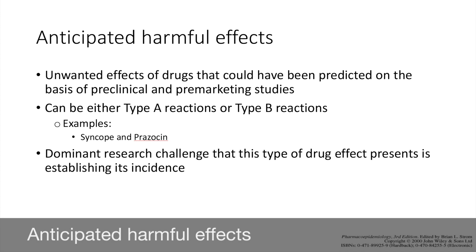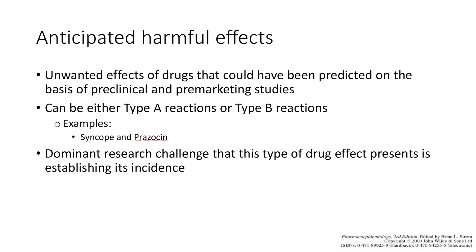Next, anticipated harmful effects are unwanted effects of drugs that could have been predicted on the basis of preclinical and pre-marketing studies. They could be either type A reactions — predictable and dose-dependent — or type B reactions. For example, the syncope that sometimes occurs with patients taking their first dose of Prazosin. Although this effect was known to occur at the time of marketing, a major question remained: how often did this event occur?